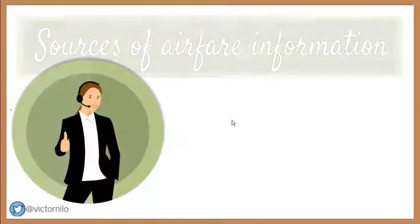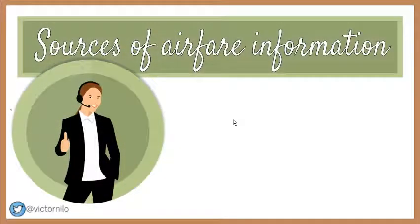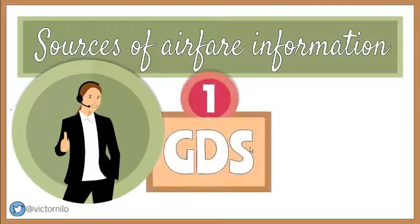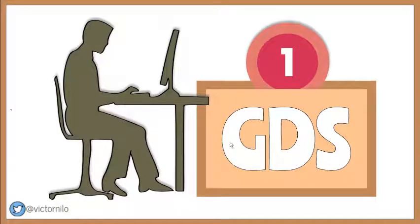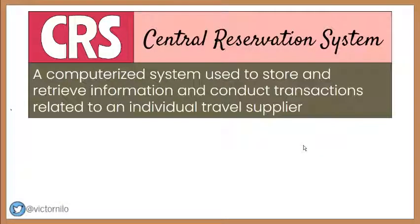Airfare information is primarily sourced electronically using a Global Distribution System, or GDS, and an airline travel agent portal. GDS is probably the most widely used technological tool in the tourism industry. GDS is sometimes interchanged with the term CRS, which stands for Computer Reservation System or Central Reservation System, because of the similarity of their functions.